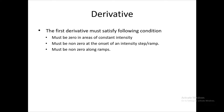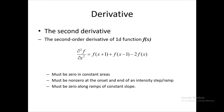The second derivative is the derivative of the first derivative, represented as d²f/dx², which involves the current pixel plus the previous and next pixels. It must also follow certain rules: it must be zero in constant areas, non-zero at the onset and end of an intensity step and ramp, and it must be zero along a constant slope ramp.